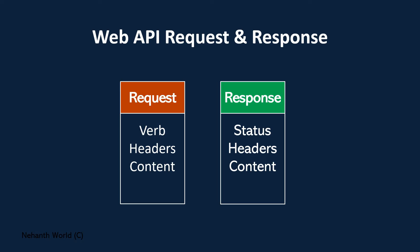A request will have three components mainly. The first one is a verb — verb is nothing but an HTTP action. The next one is headers — headers are metadata or instructions to the server. And content is the data if you want to send something to the server. These are the three main components of the request object.